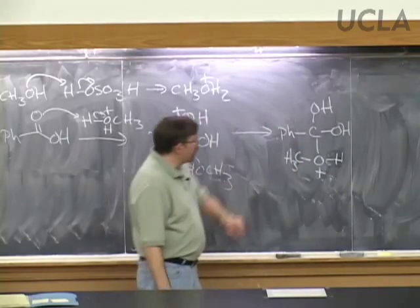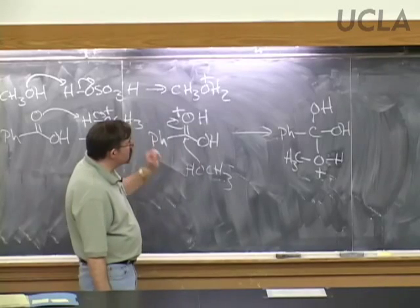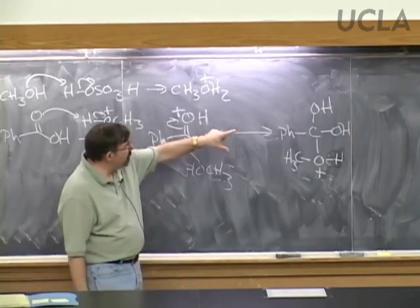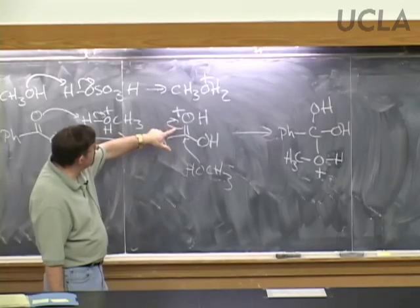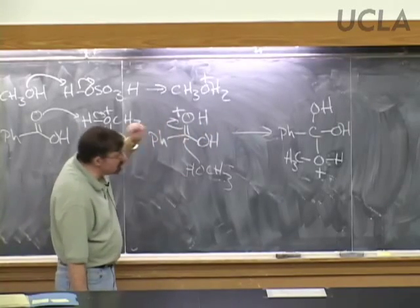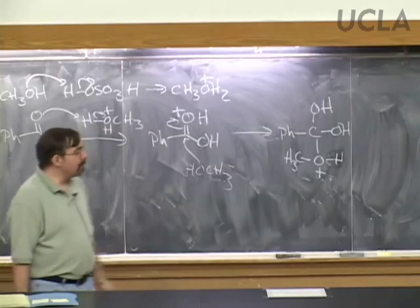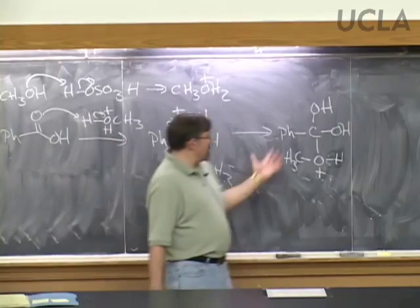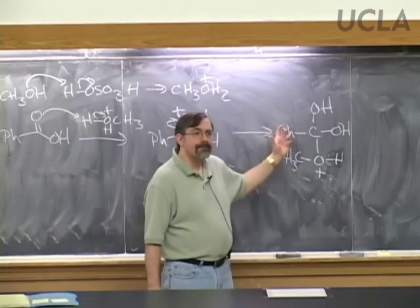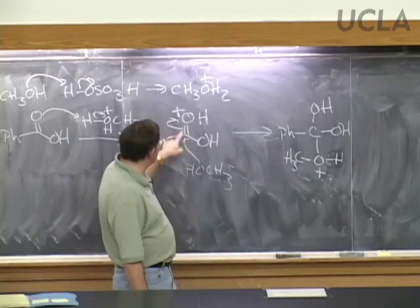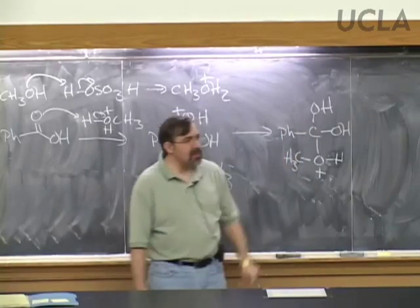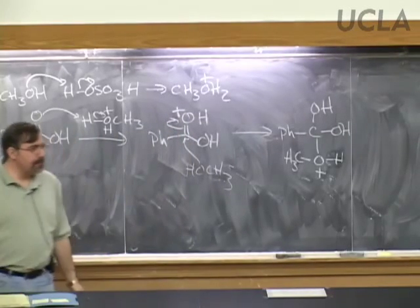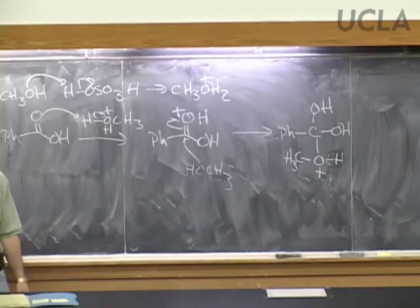The oxygen that attacked now has a positive charge because it started as neutral and gave some electrons away. The carbonyl oxygen becomes a single bond OH, but it's neutral because the pair of electrons from the pi bond now become a property of that oxygen. This is a tetrahedral intermediate—the SP2 carbonyl carbon becomes an SP3 carbon.